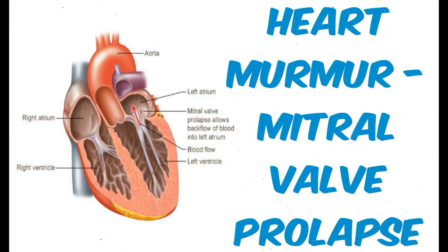The overwhelming majority of patients with mitral valve prolapse have an excellent prognosis and a normal life expectancy. A minority of patients have complications of progressive mitral regurgitation, arrhythmias, endocarditis, and sudden death. The greatest risk factors for progressive mitral regurgitation leading to heart failure include male gender, elevated systolic blood pressure, and dilated left ventricle. Severe mitral regurgitation leading to heart failure can develop from progressive myxomatous degeneration or chordal rupture.